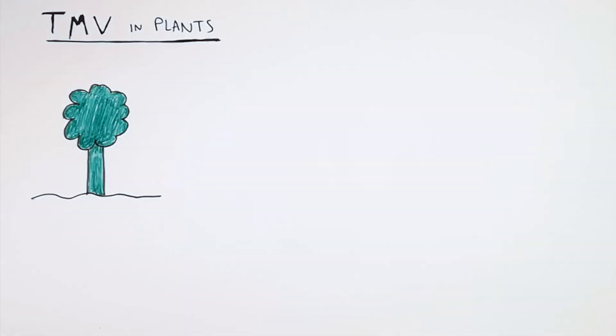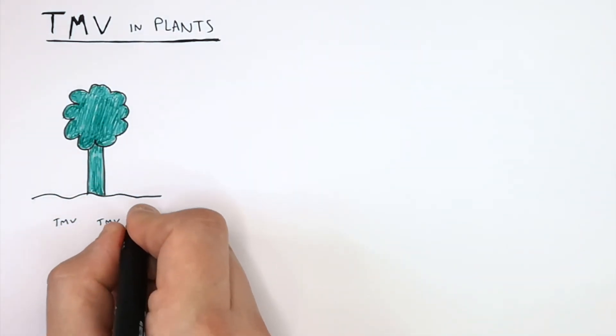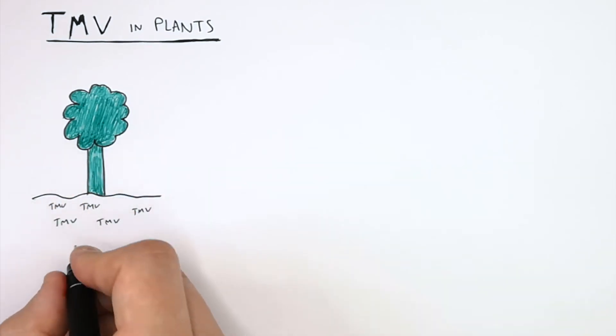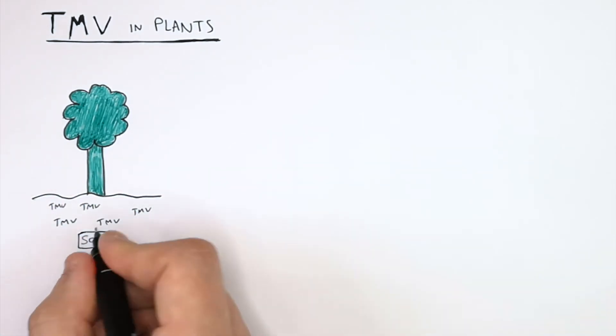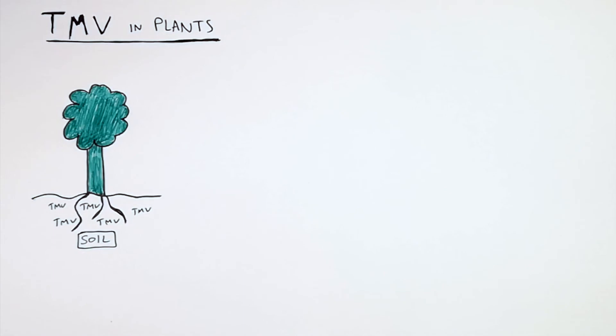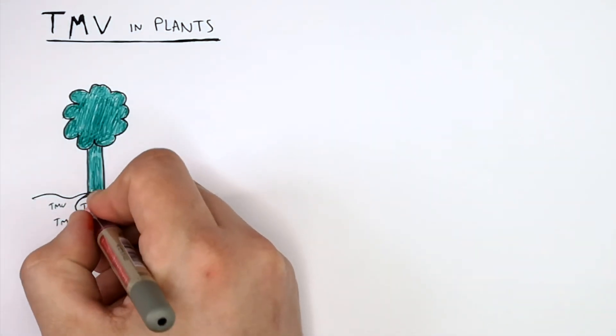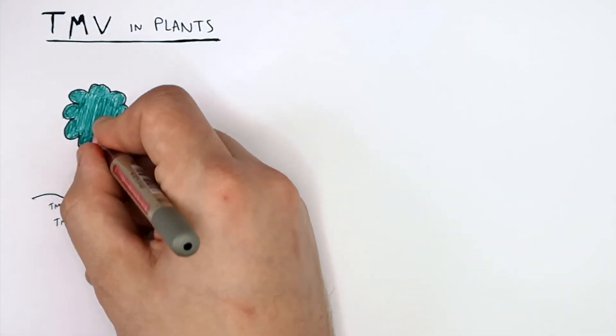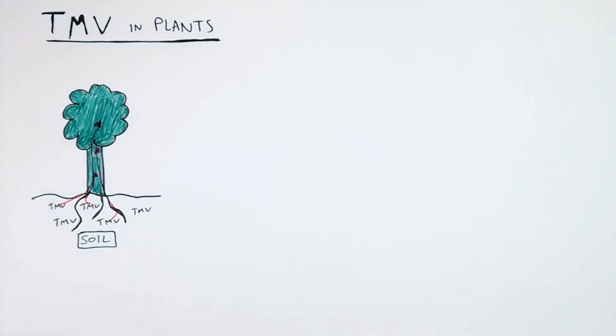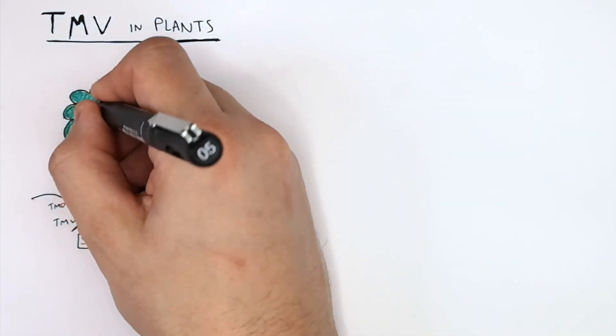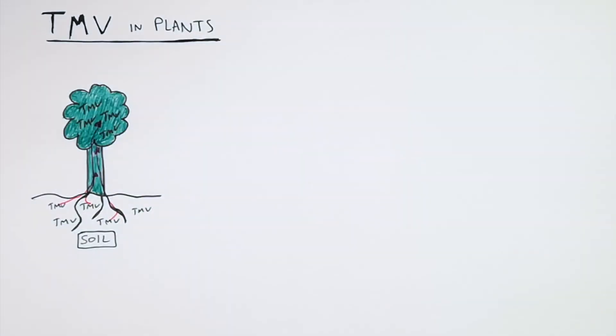TMV in plants. TMV stands for tobacco mosaic virus, and the soil is a vector for TMV, a virus. The TMV virus is absorbed into the root systems, then into the plants, where it will infect the cells of the plant. So the plant is now a host for the virus called TMV.